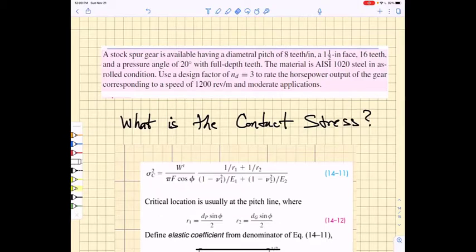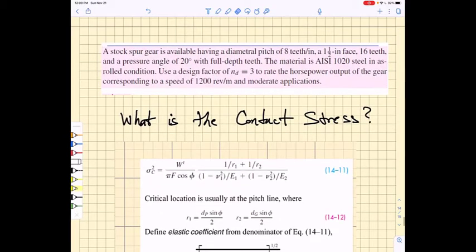It's time for us to do an example of a contact stress problem. The last problem that we solved in lecture 26 had to do with a spur gear with a diametral pitch of eight teeth per inch, a face width F equals 1.5 inches.